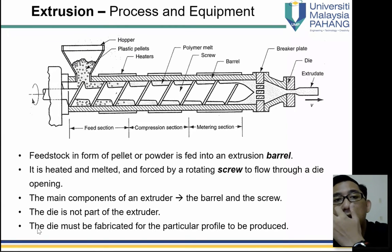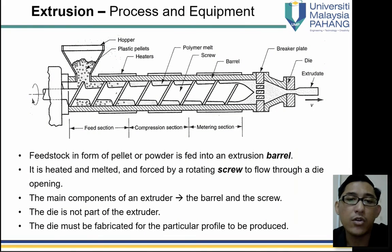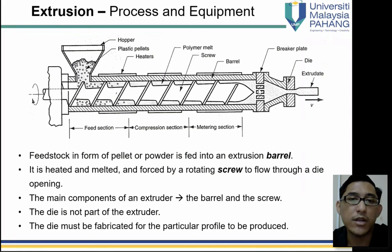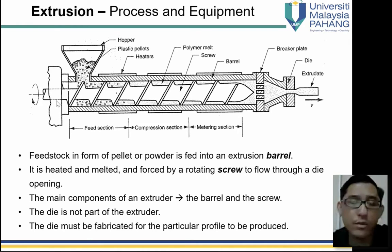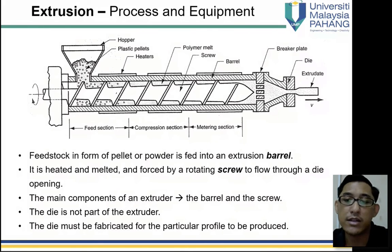This is an example of an extrusion unit. The feedstock is in the form of pellets — thermoplastic, not thermoset — thermoplastic powder or pellets fed into the hopper or barrel. Then it's heated and melted, and forced by a rotating screw to flow through a die opening. The screw here is the same as the injection molding system, but the difference is it does not move back and forth — it only rotates. The screw will rotate at constant speed and produce a consistent material flow without interruption. Unlike injection which has cycles, extrusion produces a continuous product.